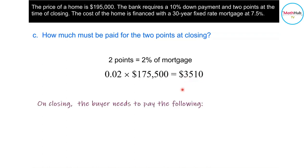The amount that will be paid during closing is the down payment, which is paid to the seller, and the cost of two points, which is $3,510, paid to the lending institution.